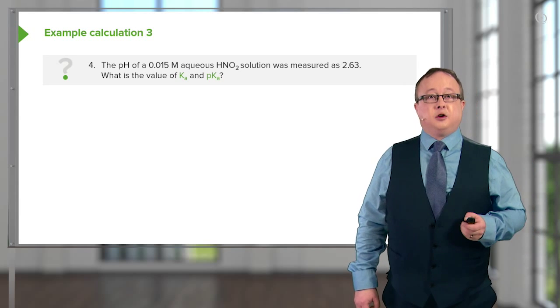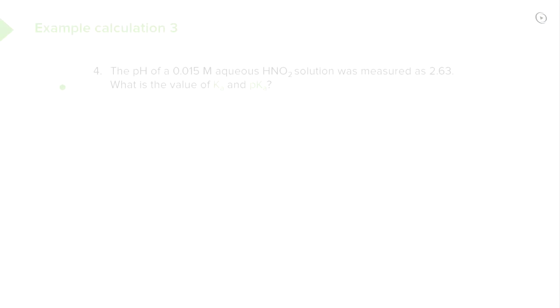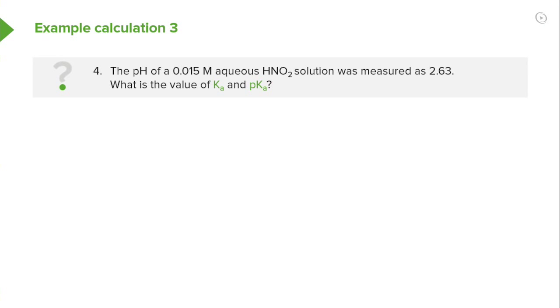Right, okay, let's have a look at another example calculation. The pH of a 0.015 molar aqueous solution of HNO2 nitrous acid was measured as 2.63. What is the value of Ka and what is the value of pKa?